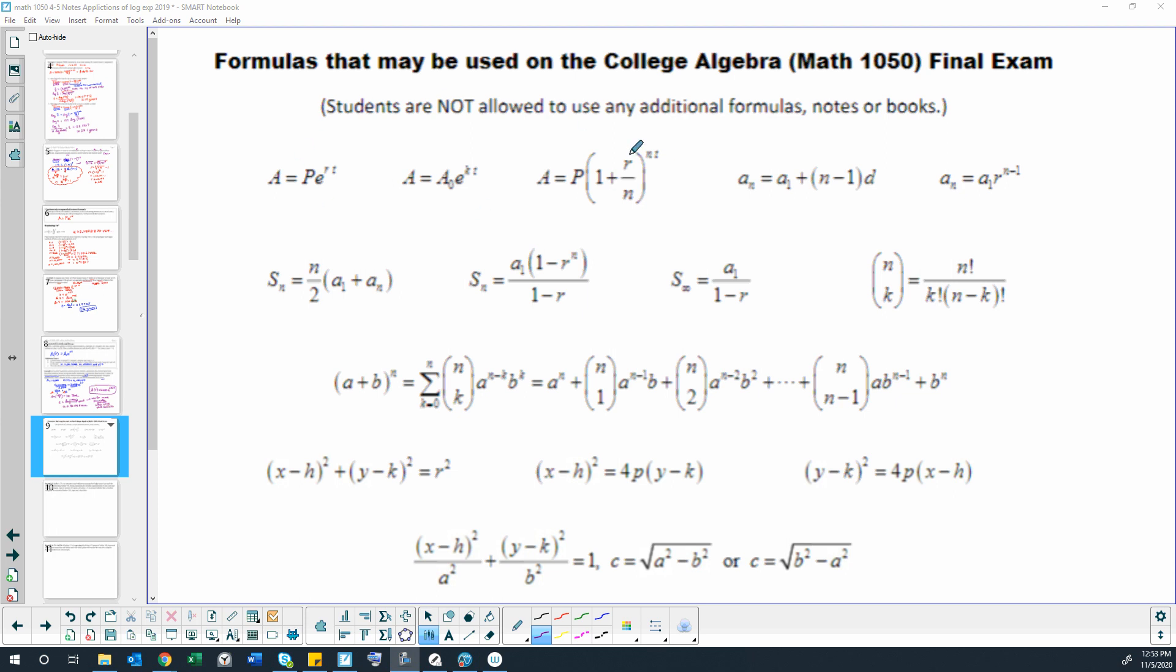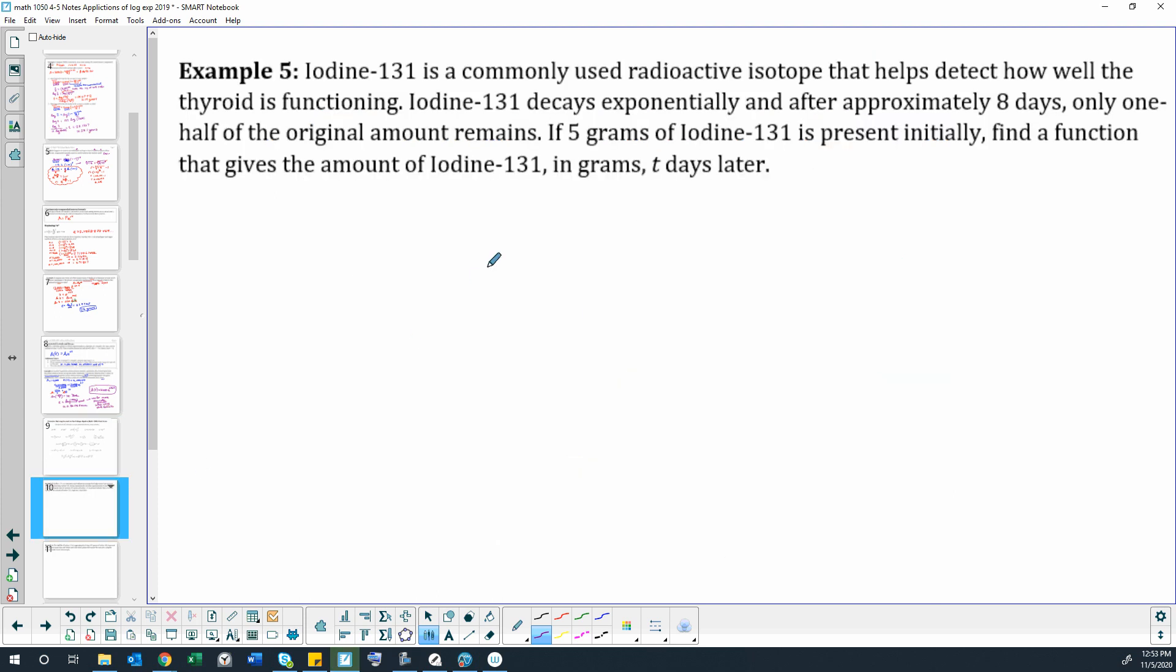Okay, let's do another example. This one's a decay problem having to do with dating with radioactive isotopes. Iodine-131 is a commonly used radioactive isotope that helps detect how well the thyroid is functioning. This isn't a carbon dating one, this is a medical related one. Iodine-131 decays exponentially and after approximately eight days only one half of the original amount remains. If five grams of iodine-131 is present initially, find a function that gives the amount of iodine-131 in grams t numbers of days later.